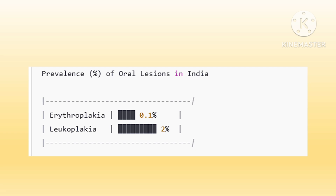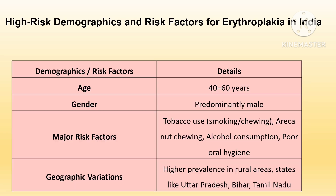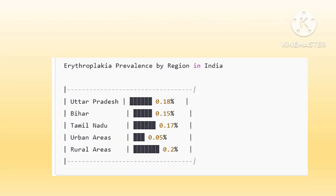Erythroplakia predominantly affects individuals aged 40 to 60 years and is more common in males, likely due to higher exposure to risk factors. In India, risk factors include tobacco chewing, which is a major contributor. Areca nut and betel quid chewing is widely practiced, particularly in rural areas. Alcohol consumption synergistically increases the risk with tobacco, and poor oral hygiene contributes to lesion persistence and further progression. Prevalence is higher in rural areas due to widespread use of smokeless tobacco and betel quid.